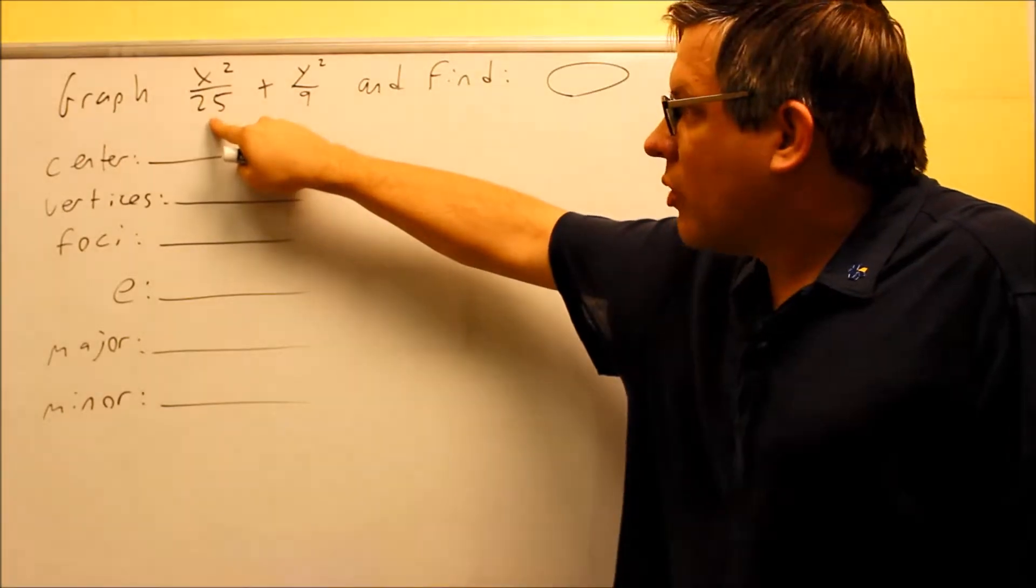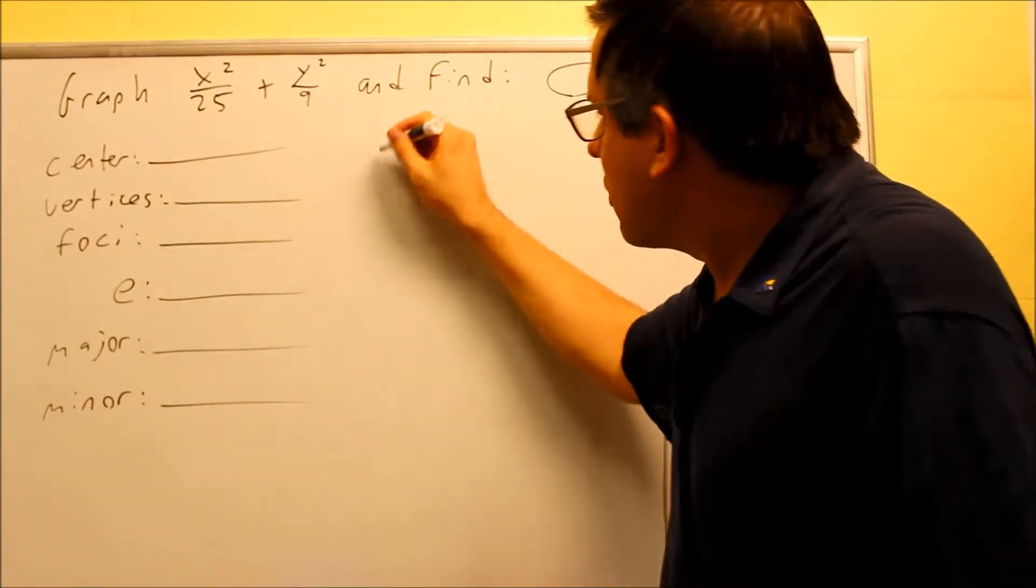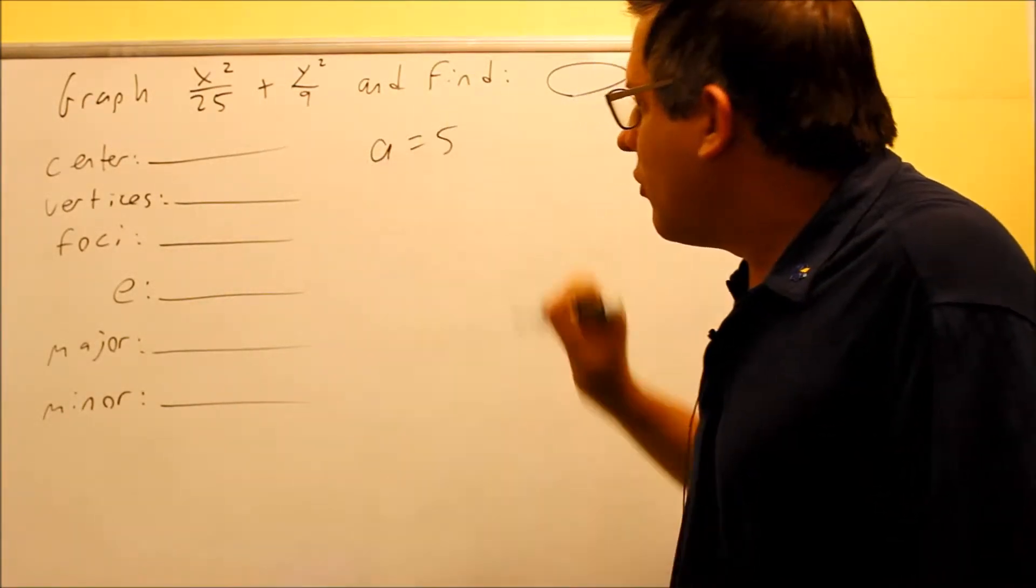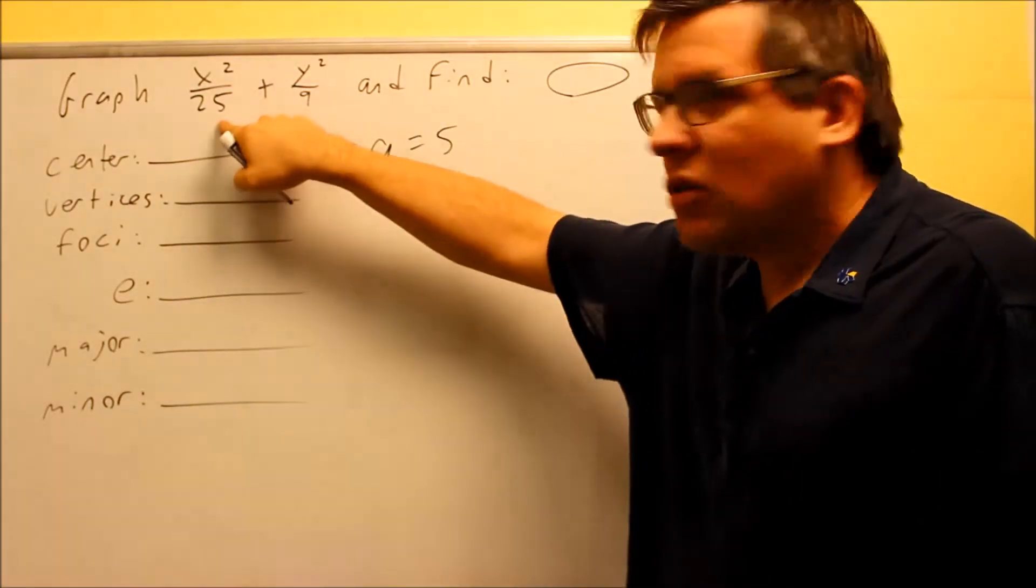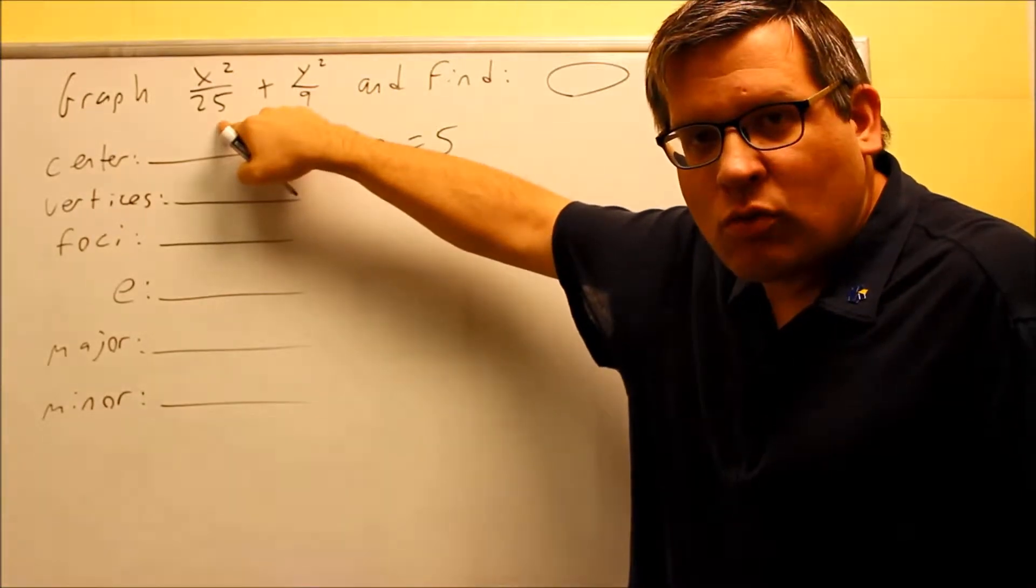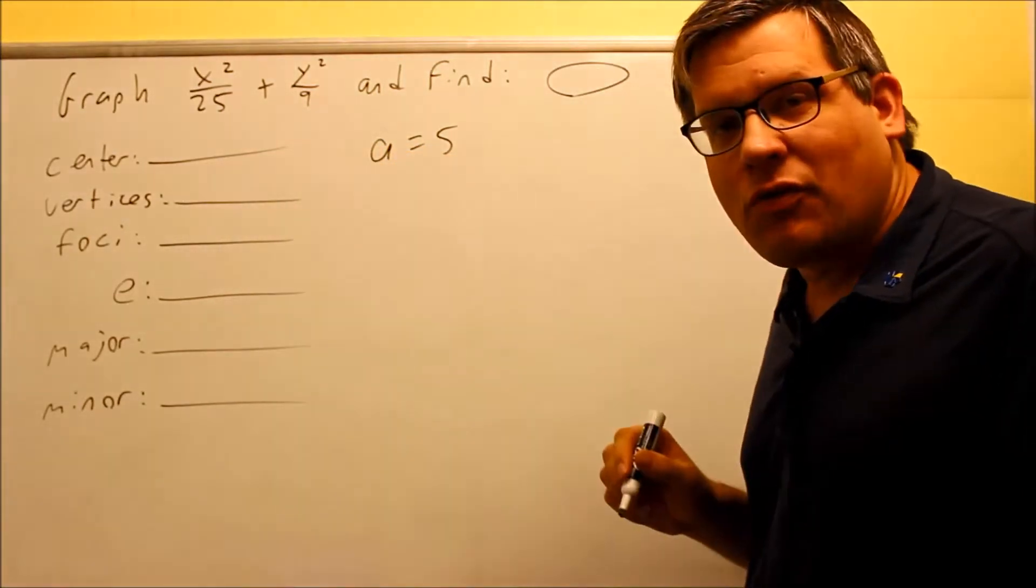Okay, well, a is always the square root of the larger number, so in this case a is the square root of 25, which is 5. The formula that's in the notes has this as a squared. So they're giving you this as a squared already, which means that's why you've got to take the square root to get 5.